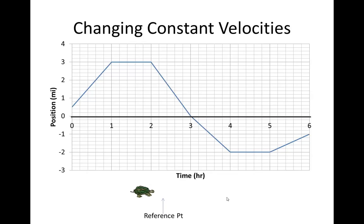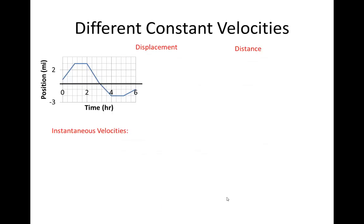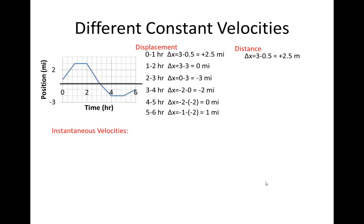We're going to do some calculations based on this particular graph. The first thing we're going to look for is individual displacements, the distances, and the velocities. We've got displacement between 0 and 1, which is 2.5 miles. He started at 0.5, ended at 3. Then the second one is 0, then negative 3 because he went back to the reference point. So he lost 3 miles. Negative 2 miles, 0 miles, 1 mile, and then the same values distance-wise, but we're taking the absolute values. So we're always going to have positive information.